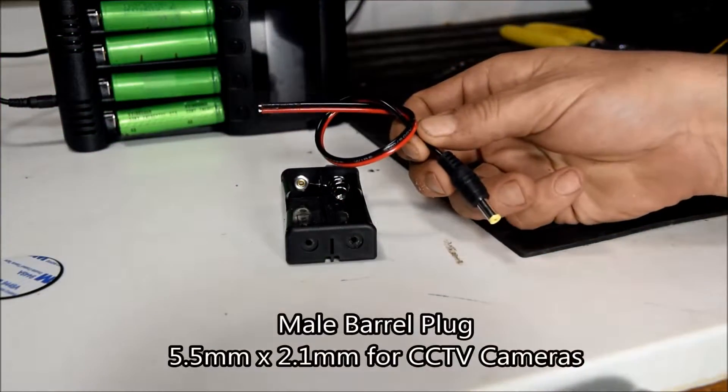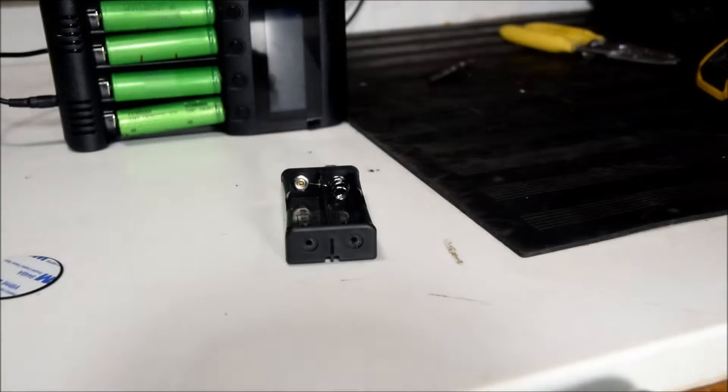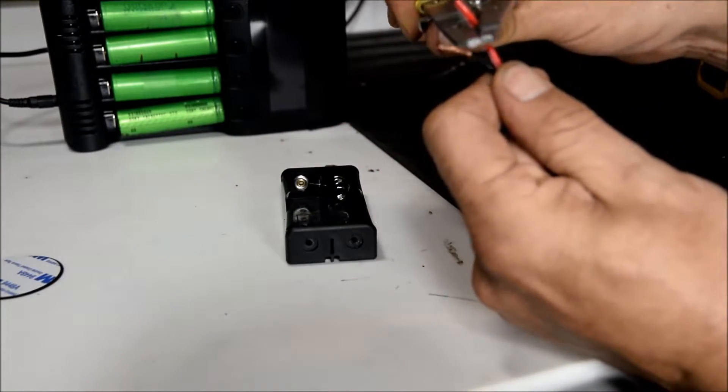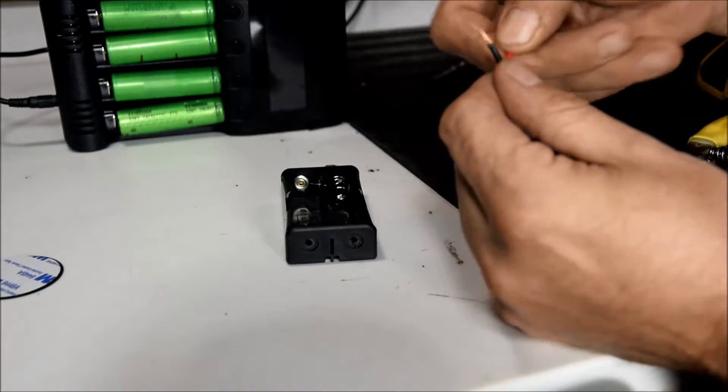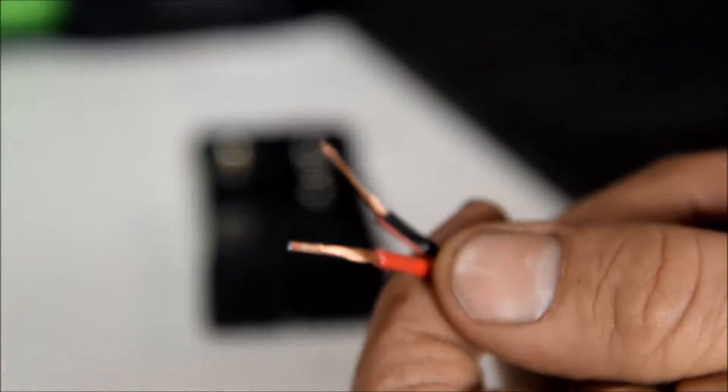This is the male barrel plug adapter and is commonly used for closed caption television or surveillance systems. Make sure to get the correct connector for your application. Here I'm stripping off about a half inch of the wire insulation and twisting the wires.